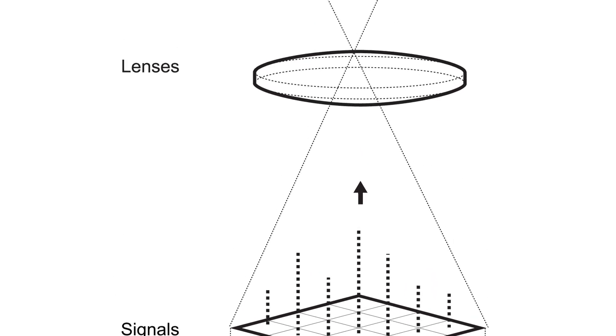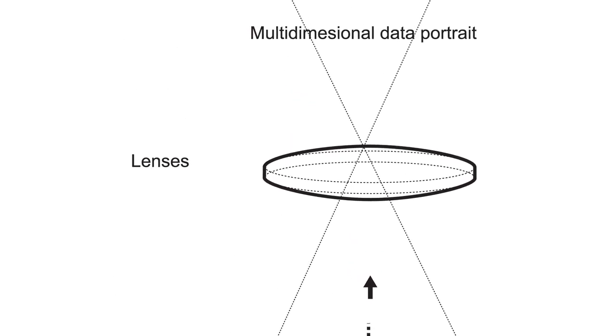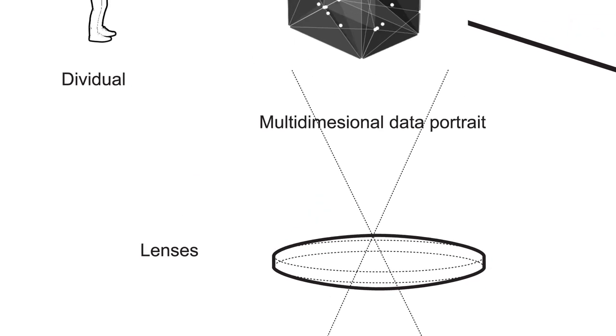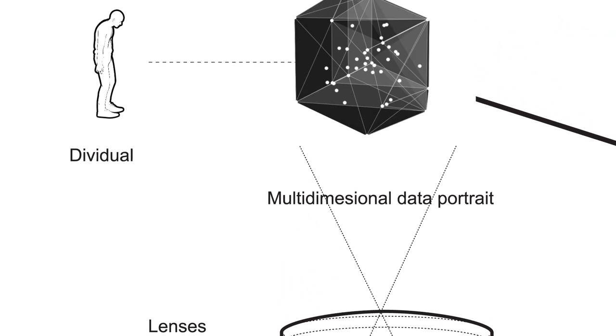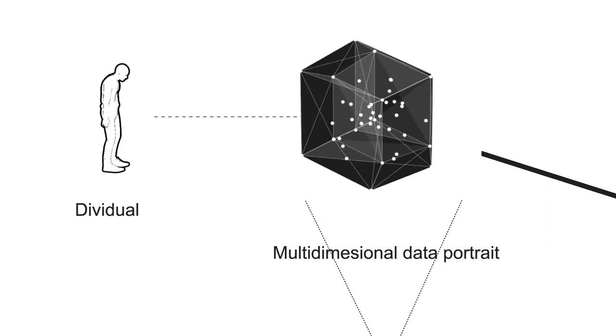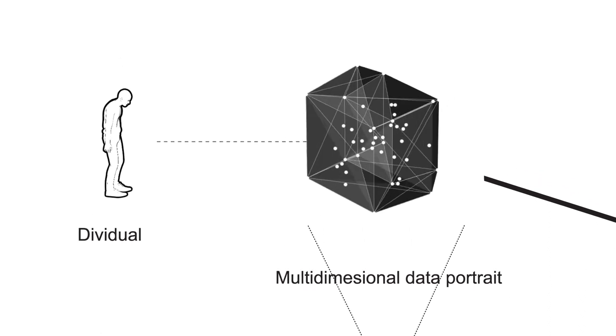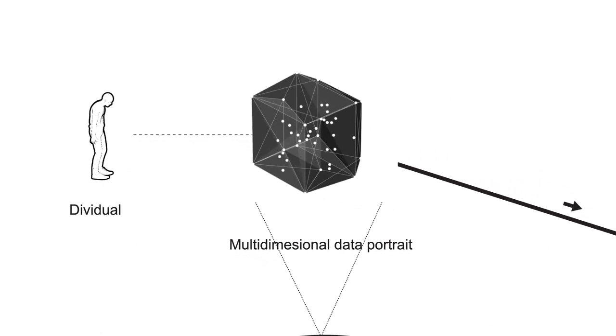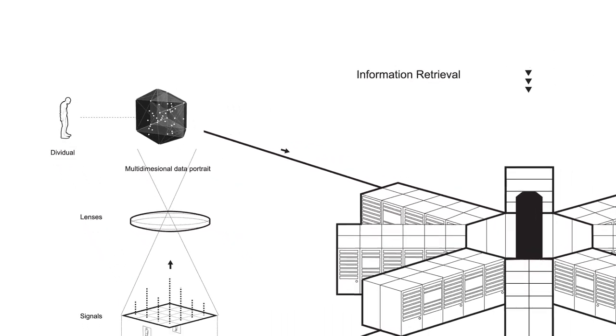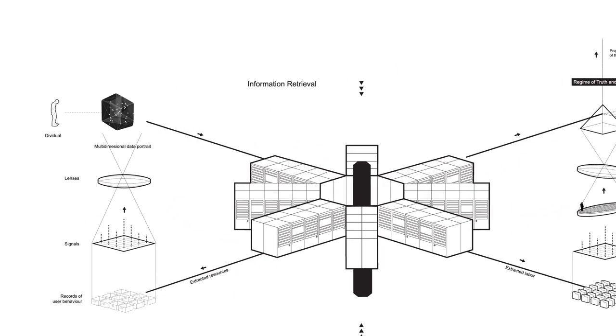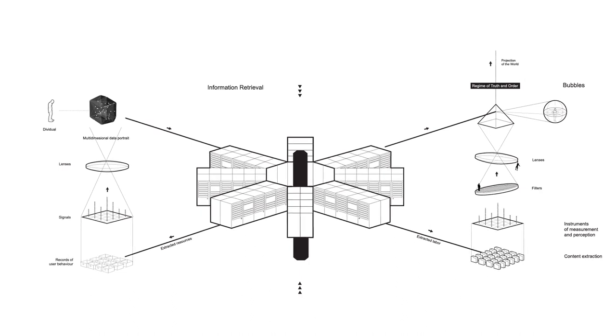This system does not see us through linear narratives emerging from our browsing behavior, metadata, or movements in physical space but as n-dimensional statistical projections. Each and every one of our clicks sharpens the resolution and complexity of this abstract and constantly changing statistical portrait or data body.